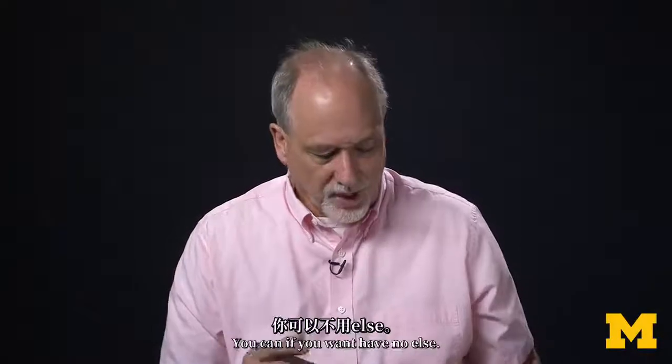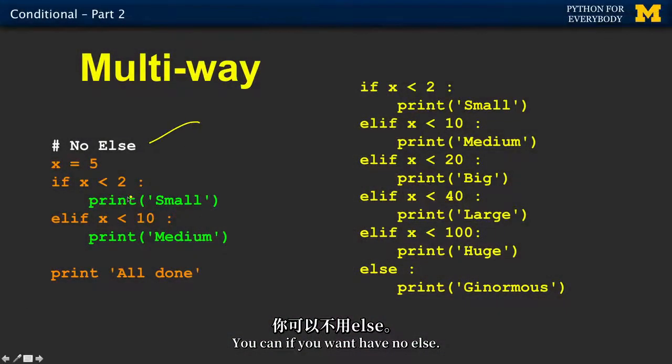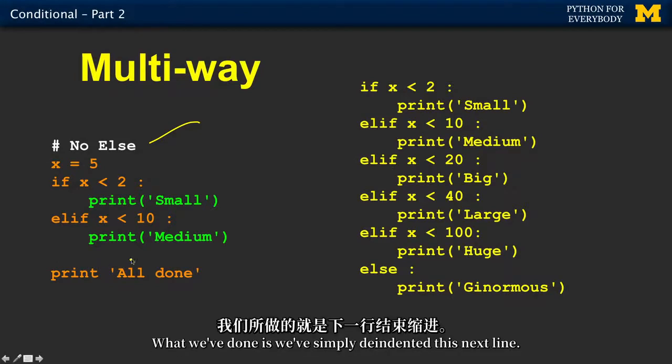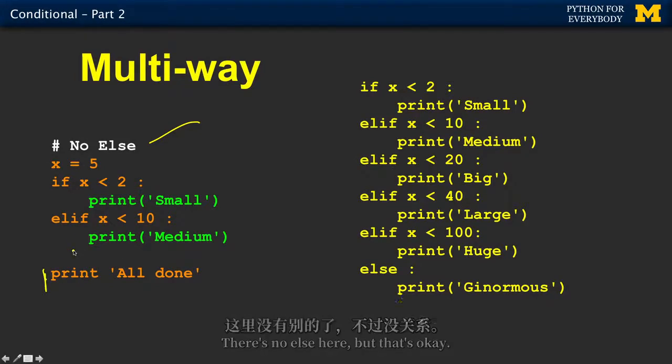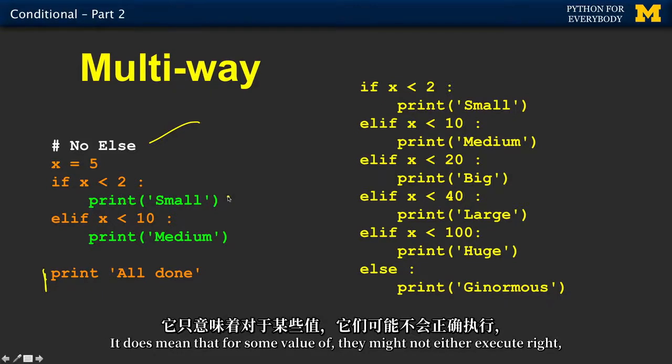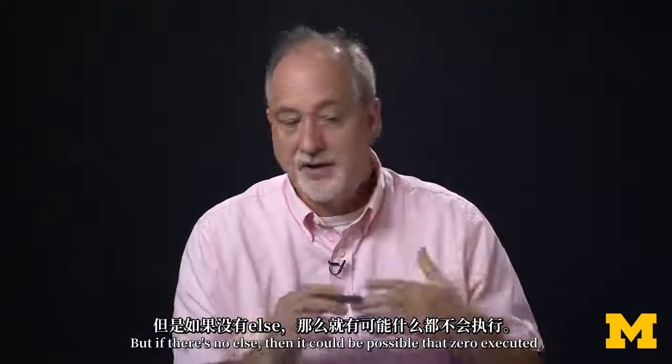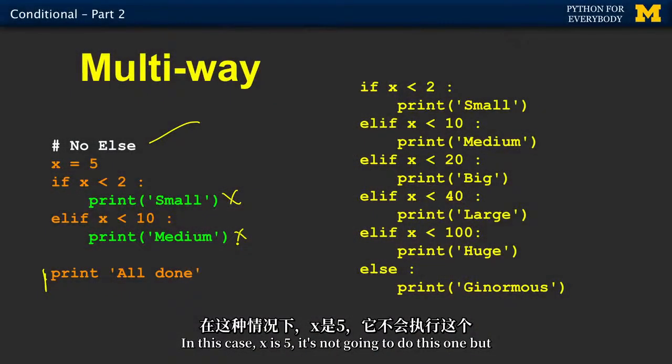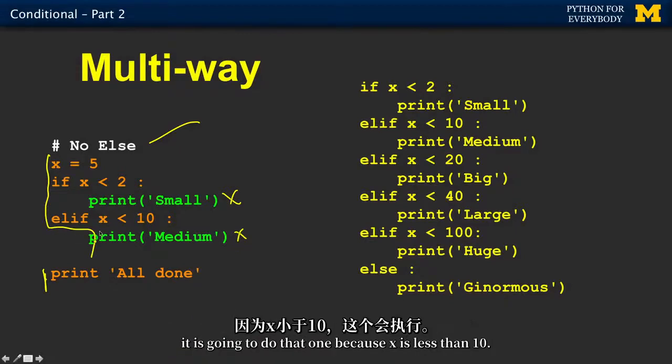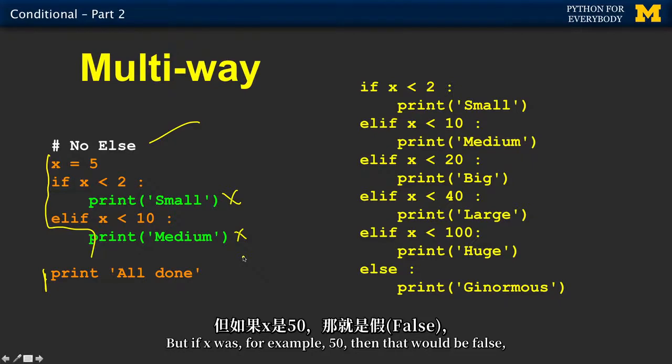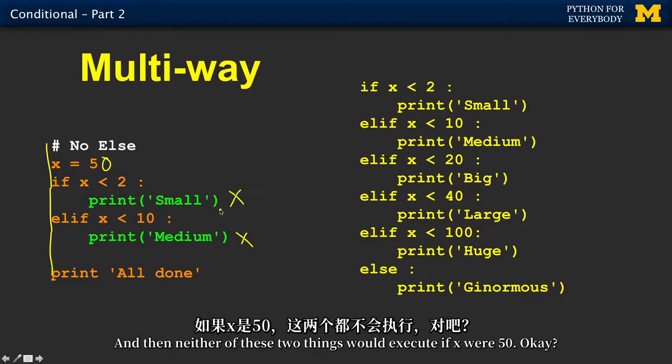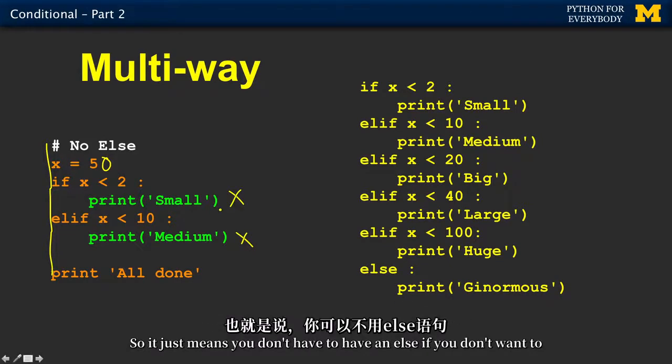There's other variations on this. You can, if you want, have no else. There is no need to have an else. It does mean that for some value, they might not either execute, right? Because there's no else. If there's else, then at least one will execute. But if there's no else, then it could be possible that zero executed. In this case, x is five, it's not going to do this one, but it is going to do that one because x is less than 10. But if x was, for example, 50, then that would be false, that would be false, and it would just go.